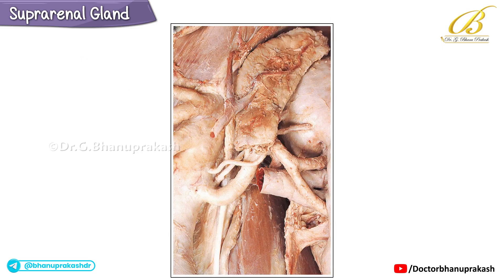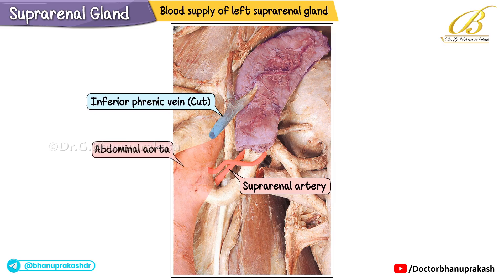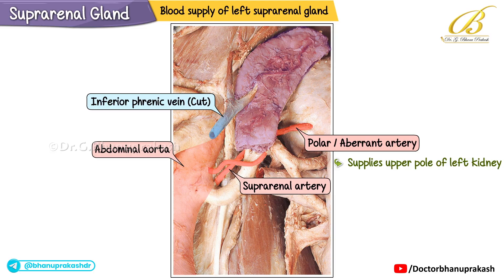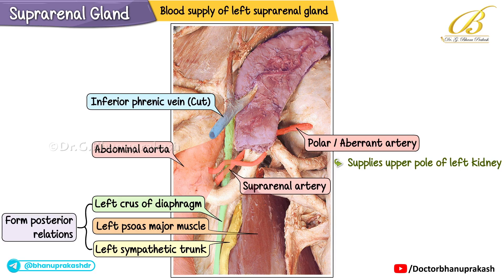This illustration shows the blood supply of the left suprarenal gland. In the image, the cut end of the left inferior phrenic vein can be seen. The left suprarenal artery arises directly from the abdominal aorta, supplying the gland. Additionally, a left polar or aberrant artery supplies the upper pole of the left kidney. Posteriorly, the left crus of the diaphragm, the left psoas major muscle, and the left sympathetic trunk form the posterior relations of the left suprarenal gland and kidney.